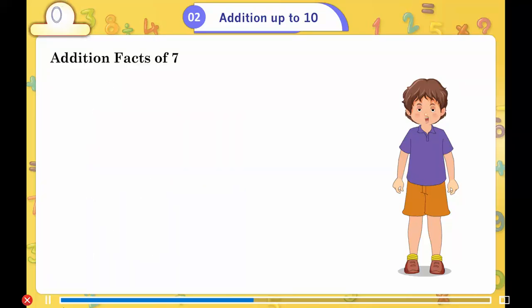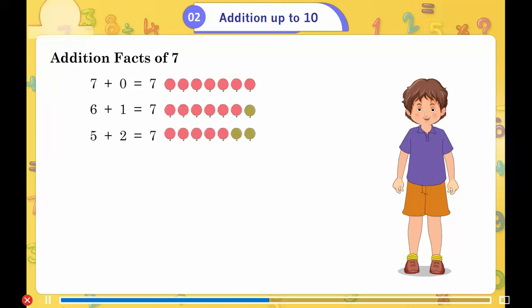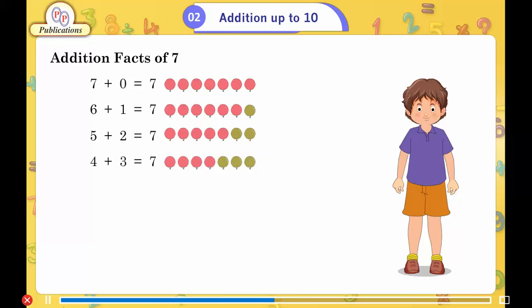Addition facts of 7: 7 plus 0 is equal to 7, 6 plus 1 is equal to 7, 5 plus 2 is equal to 7, 4 plus 3 is equal to 7, 3 plus 4 is equal to 7.